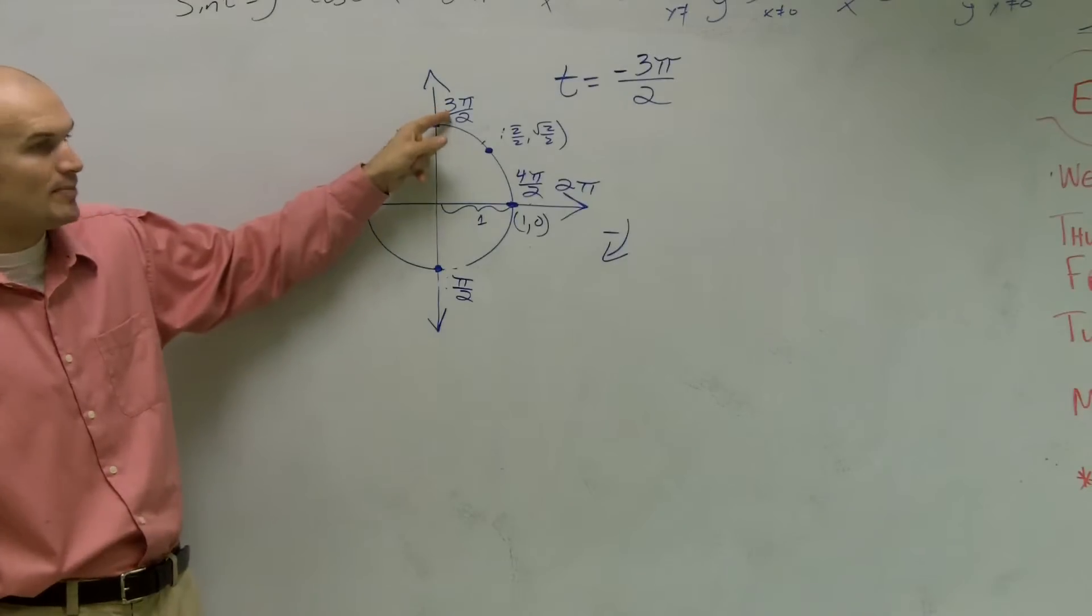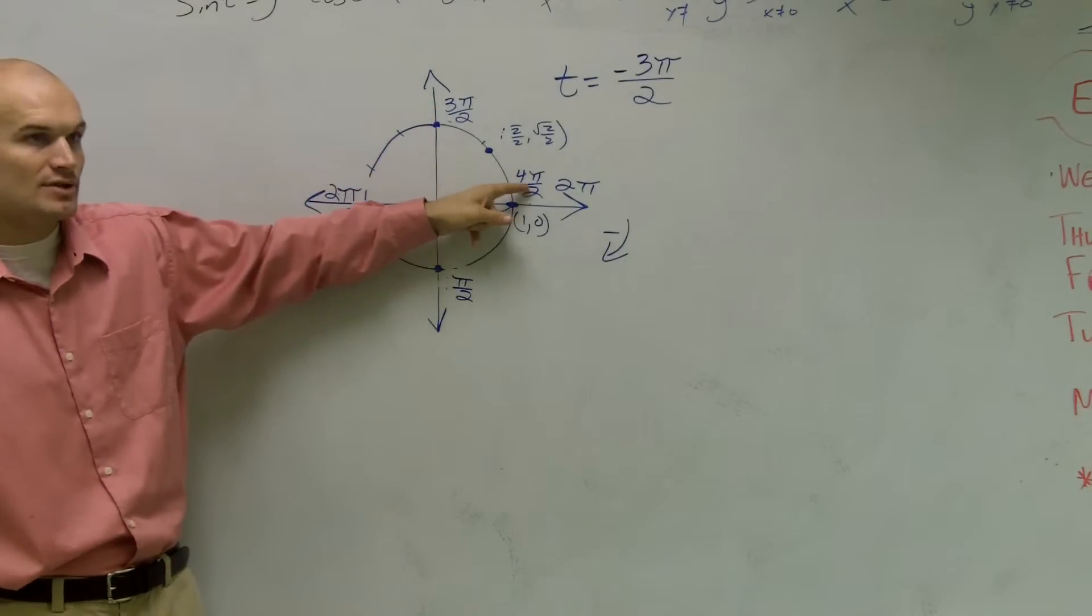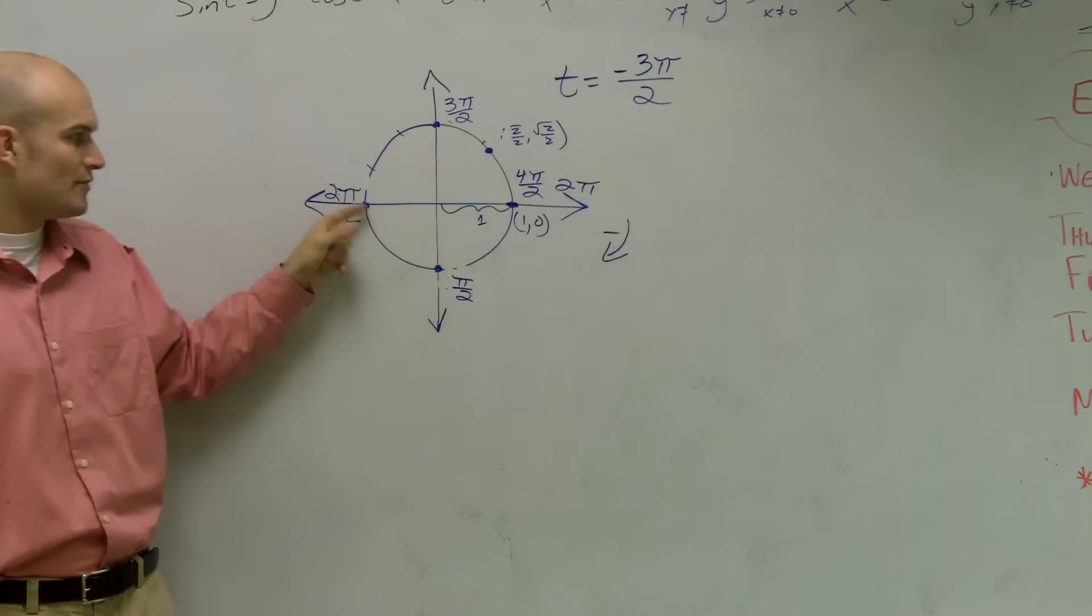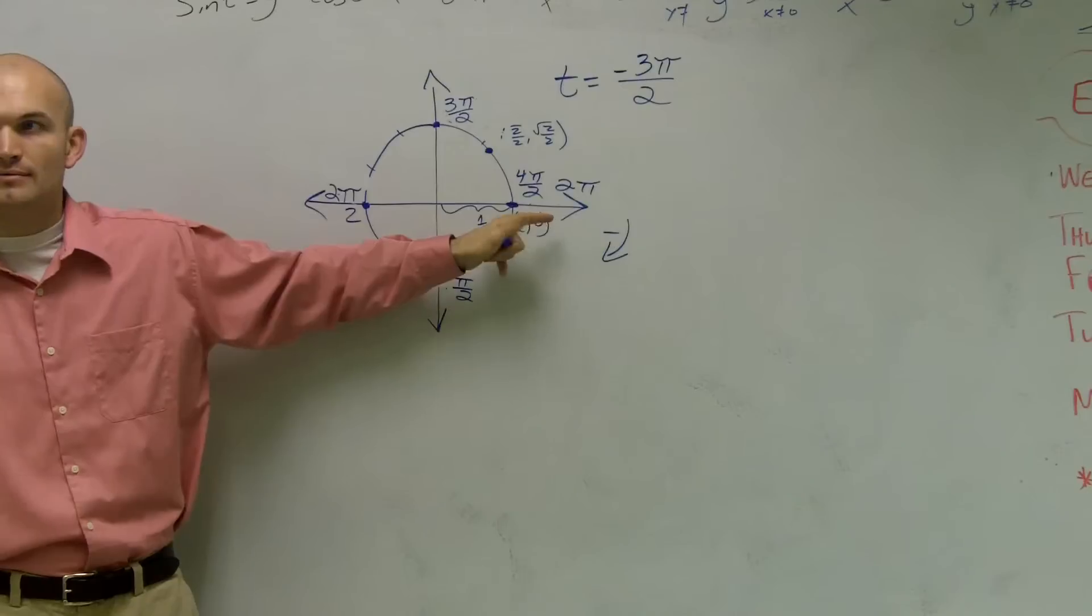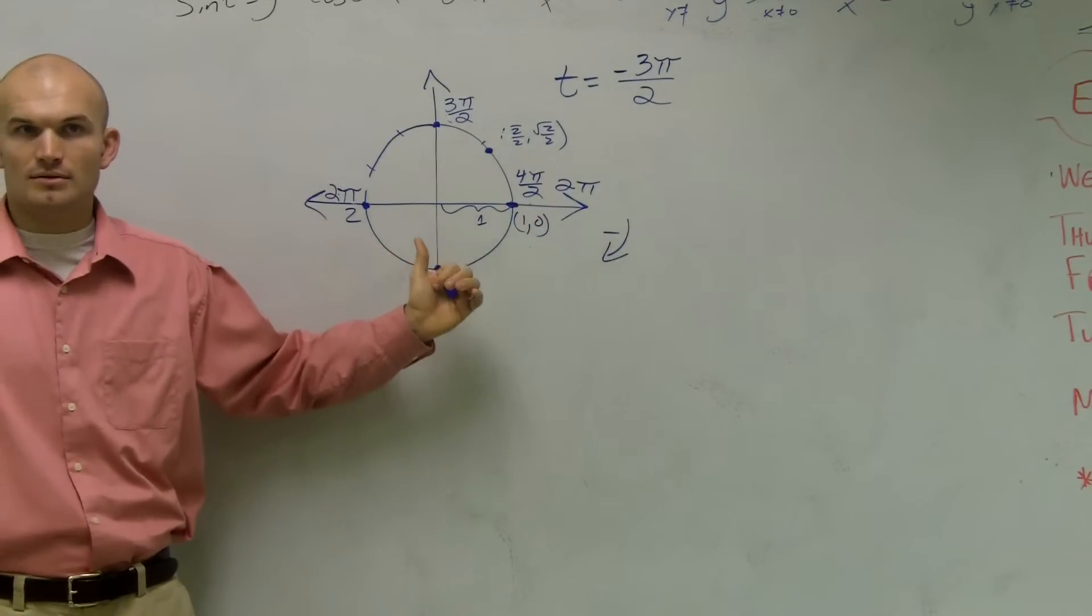And then this next point would be 3 pi over 2 and 4 pi over 2, which remember, when we first learned in a circle, halfway around is pi and all the way around is what we call 2 pi. So is everybody with me?